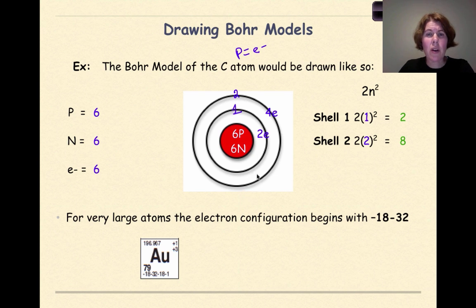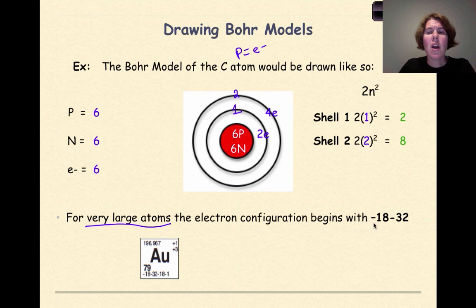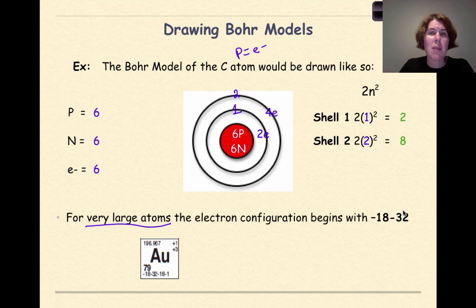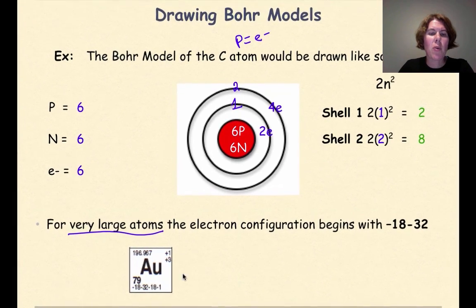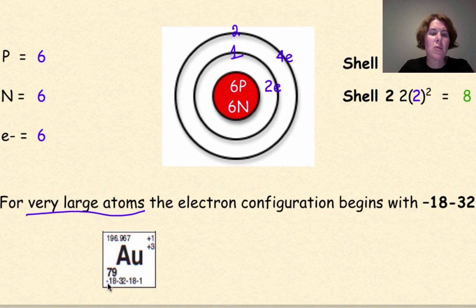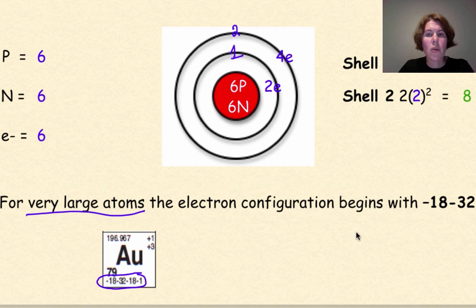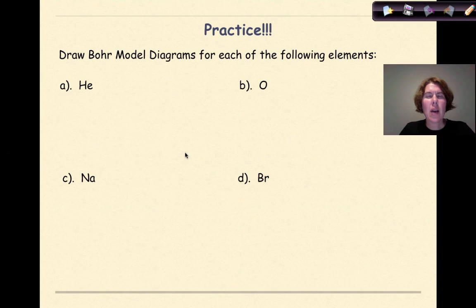For very large atoms, the electron configurations on your Regents reference table are going to start with dash 18 dash 32. This basically means there wasn't enough room in the box to cram in the entire electron configuration, so they cut off the beginning part of the 2-8. For example, with Au, if you look at the electron configuration, you see dash 18, then 32, 18, and 1 — that's the truncated electron configuration. If we were to write out the whole thing, the beginning portion has been taken out.